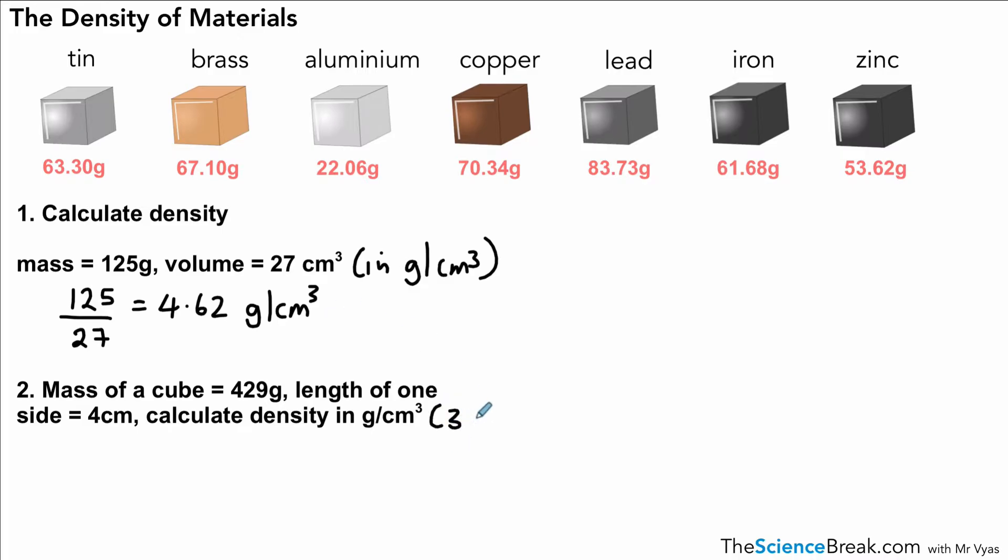The next one is slightly trickier because we have to do two levels of calculation and we want our answer to three significant figures. Our mass is 429 and we need to divide that by the volume, but we don't have the volume. We have the length of one side, and remember it's a cube, so if one side is 4 centimeters, all the sides are 4 centimeters. So the volume is length times width times height, so that would be 4 times 4 times 4, or another way to say that, it's 4 cubed. That gives us an answer of 64 centimeters cubed.